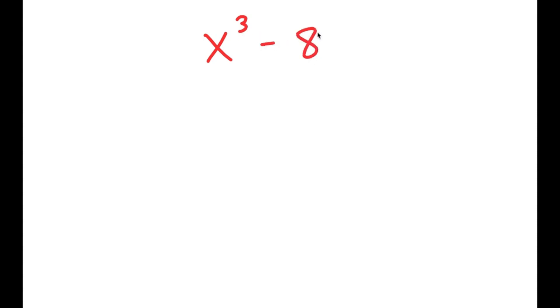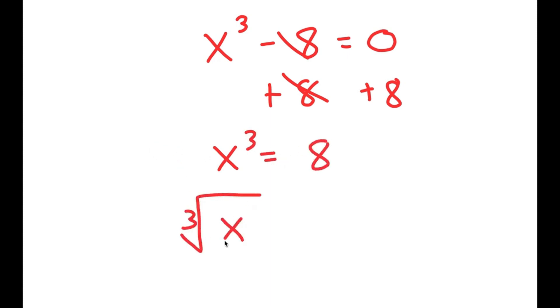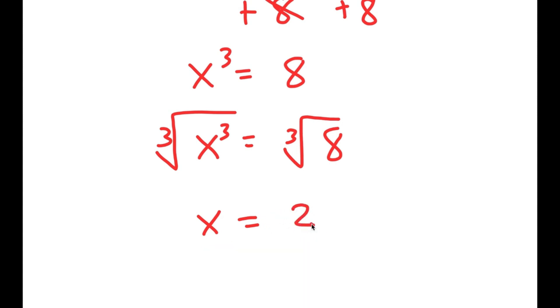In this video, I'm going to solve the equation x to the power of 3 minus 8 is equal to 0. So how most people solve this equation is they add 8 on both sides, so you get x to the power of 3 is equal to 8. And then they take the cube root on both sides. The cube root of x to the power of 3 is x, and the cube root of 8 is 2. So then they get x equals 2, which is a solution to this equation.